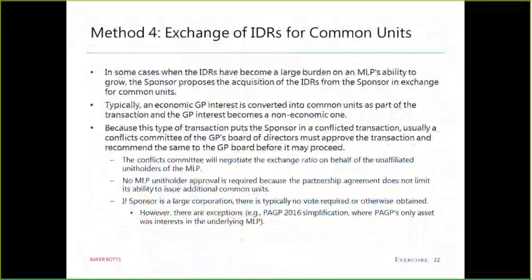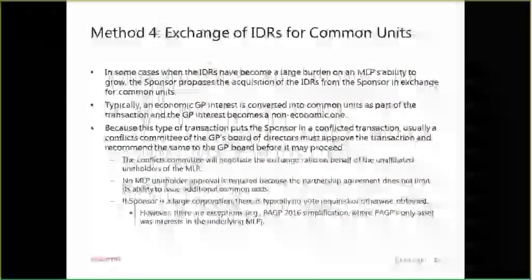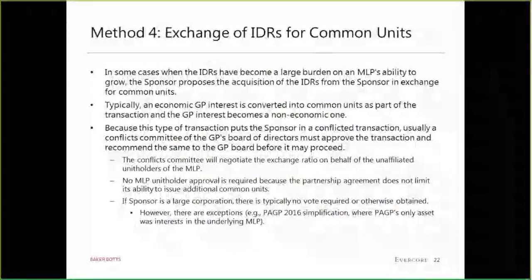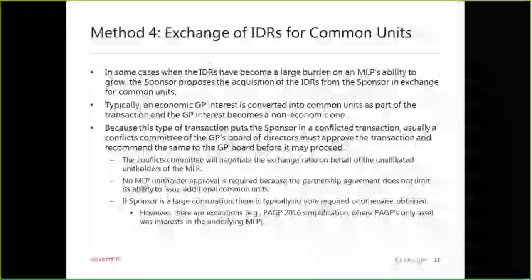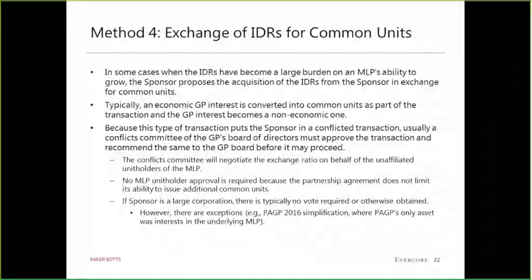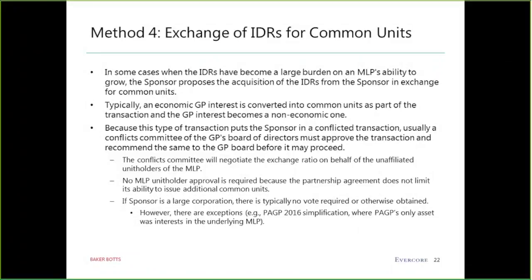Method four is the exchange of IDRs for common units — with possible bells and whistles — but basically it comes down to an exchange ratio for the IDRs in exchange for common units. It is clearly a conflict transaction that goes to the conflicts committee to negotiate the exchange ratio. Unit holder approval is not required because partnership agreements have no limit on the ability to issue common units — unlike corporations with authorized capital — and the NYSE 20% limit on private placement share issuance doesn't apply to limited partnerships.